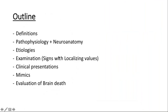The outline of today's presentation will be as follows. We'll go through important definitions and the neuroanatomy of structures important in maintaining consciousness. We'll cover etiologies contributing to altered level of consciousness — from mild, moderate, severe, to coma — and physical examination signs that help localize lesions. Then we'll cover different clinical presentations, coma mimics, and lastly, signs and evaluation of brain death as per the American Academy of Neurology.